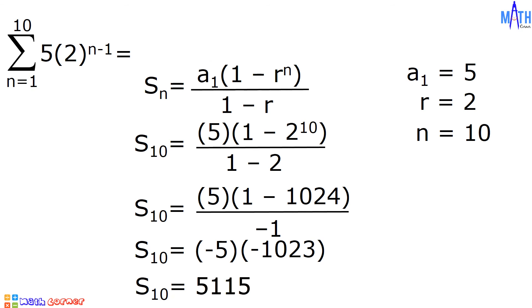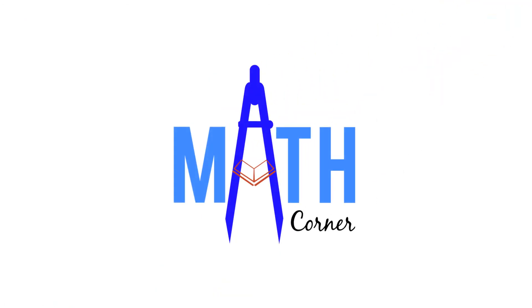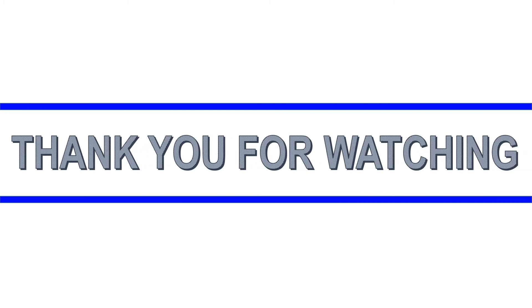Therefore, the summation of 5 times 2 raised to n minus 1, where n goes from 1 to 10, is equal to 5,115. And that is how to find the sum of the terms of a finite geometric sequence in summation notation. That's all for this video. Thank you for watching.